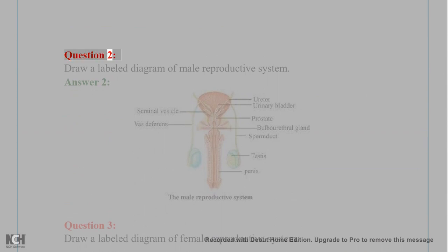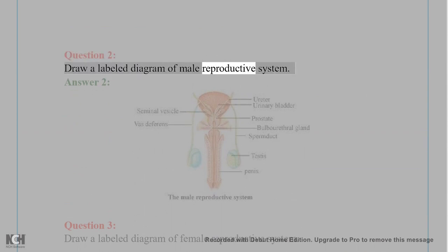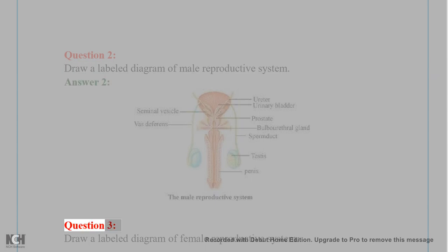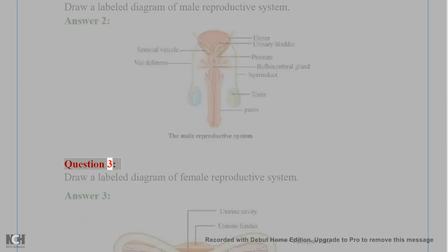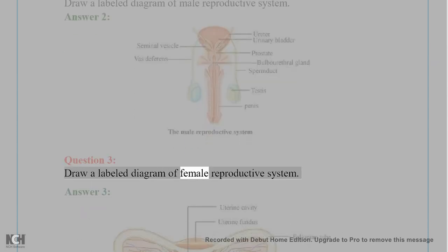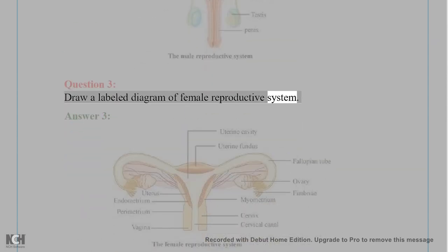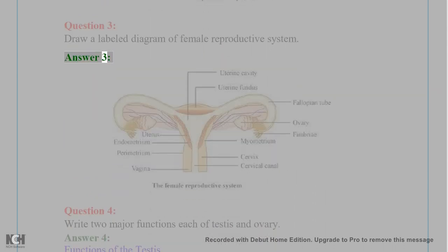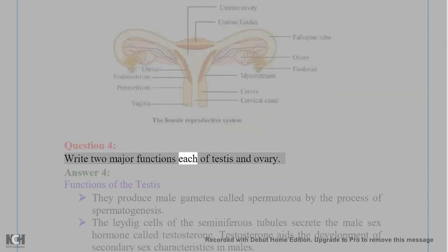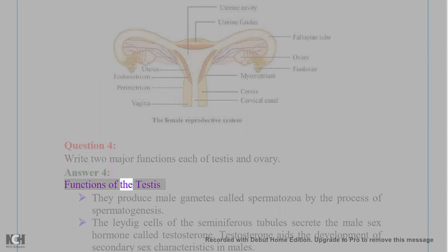Question 2: Draw a labeled diagram of male reproductive system. Question 3: Draw a labeled diagram of female reproductive system. Question 4: Write two major functions each of testis and ovary. Answer 4: Functions of the testis — they produce male gametes called spermatozoa by the process of spermatogenesis.